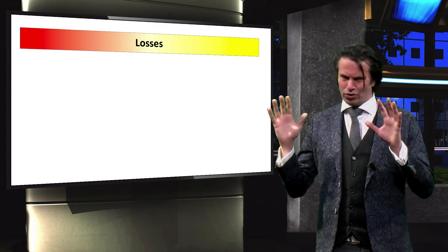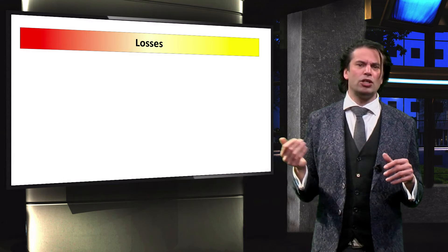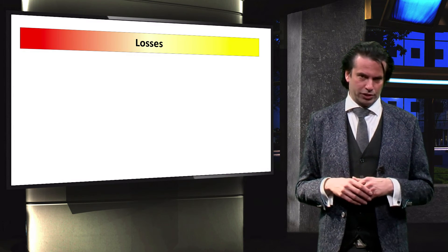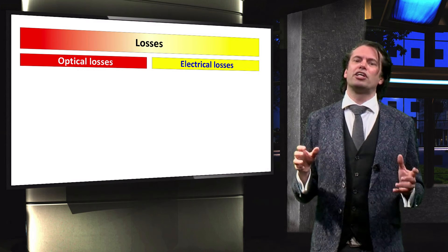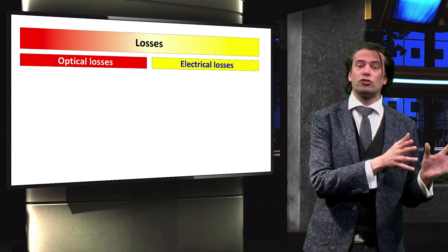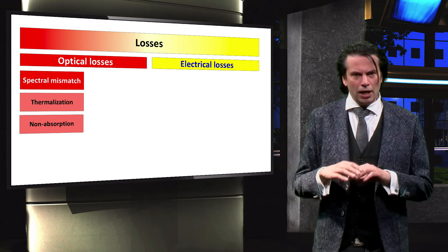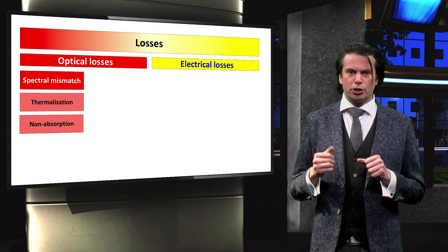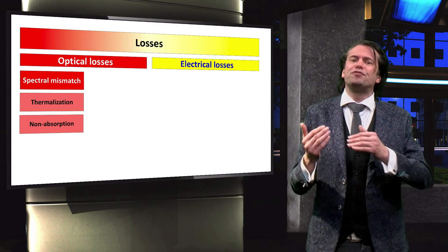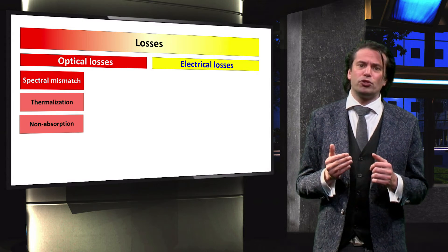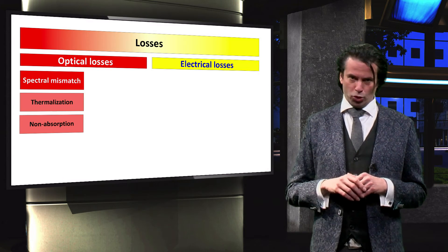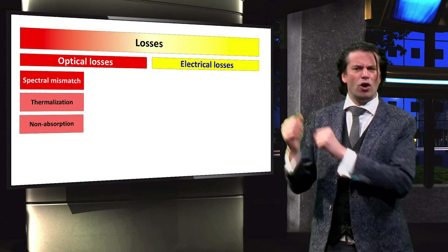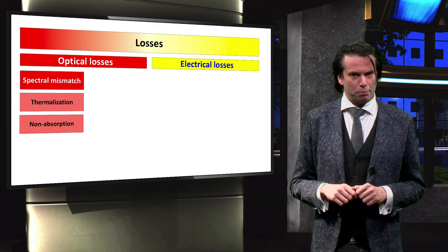Let's take a look at these losses. Each of the loss mechanisms will be extensively discussed in the following sections on optics and semiconductor physics. The losses in solar cells can be divided into optical losses and electrical losses. By far the largest losses occur due to spectral mismatch, which considers that some photons with low energy cannot be absorbed by a single-junction solar cell, while for high-energy photons, only a fraction of the energy can be used.